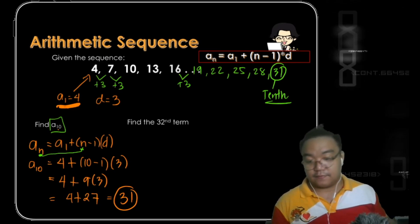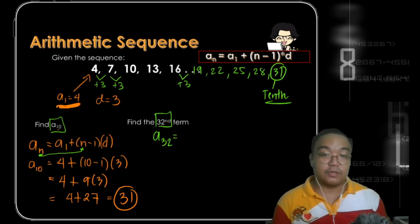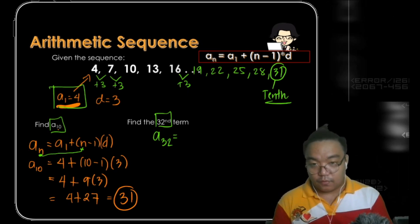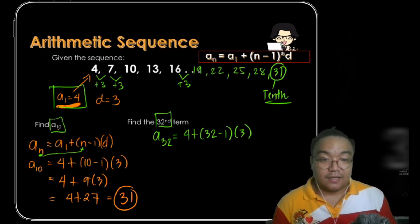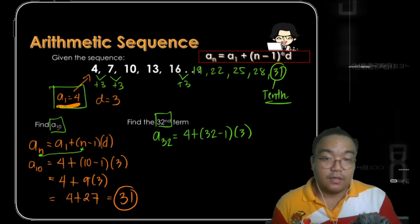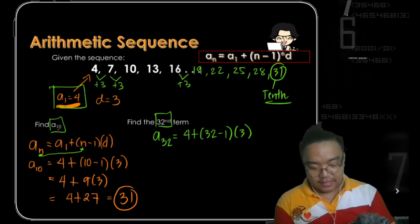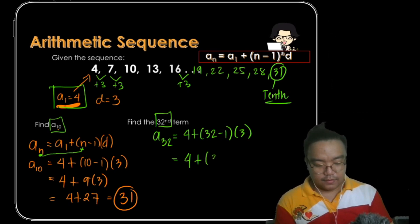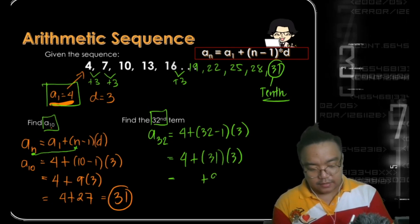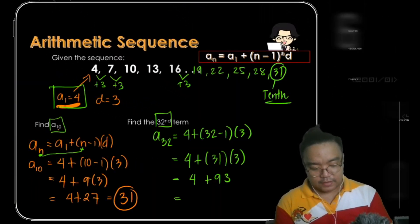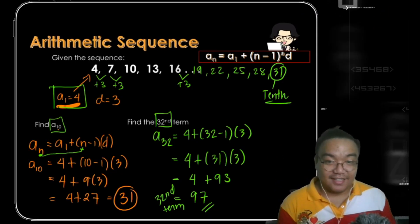For an easy way to find the nth term, we apply the formula. For the 32nd term: a sub 32 equals 4 plus (32 minus 1) times 3. Always use parentheses carefully, especially with a calculator. So that's 4 plus 31 times 3. Applying order of operations, 31 times 3 equals 93, and 93 plus 4 gives us 97. So the 32nd term is 97.